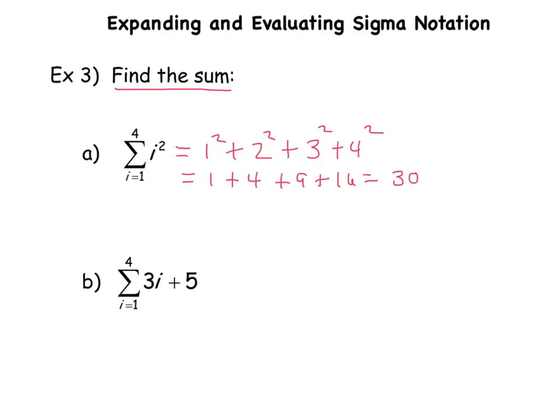And in this one here I have 3(1) + 5, plus 3(2) + 5, plus 3(3) + 5, plus 3(4) + 5, and then I stop. These numbers evaluate to 8 + 11 + 14 + 17,